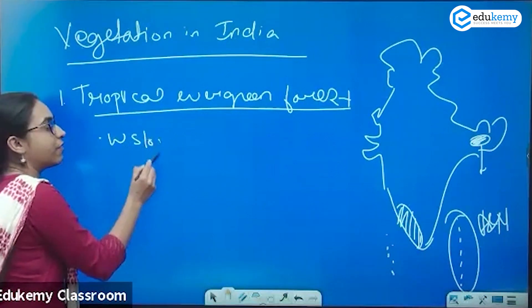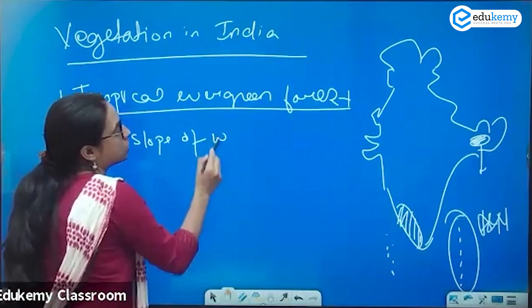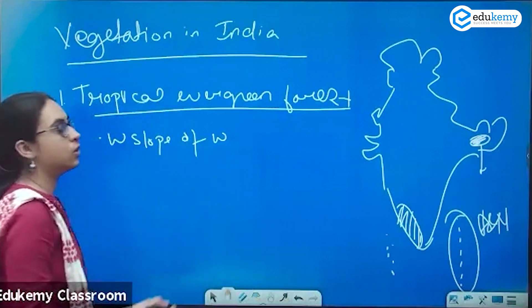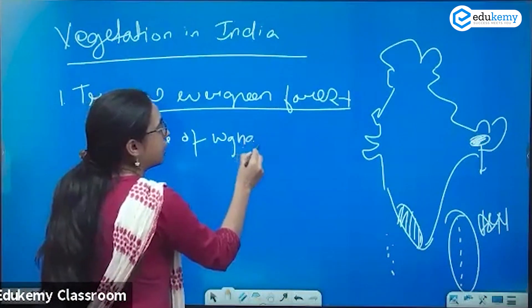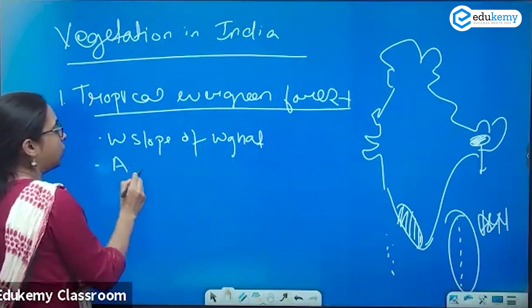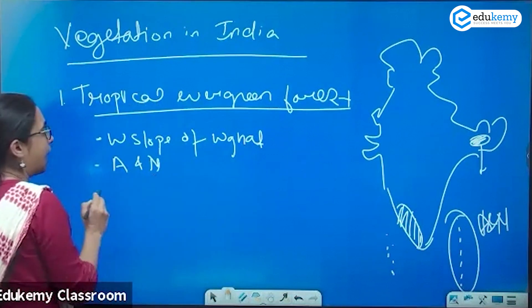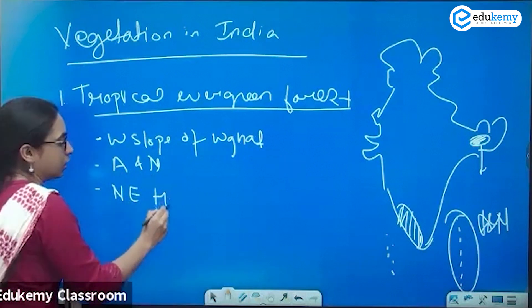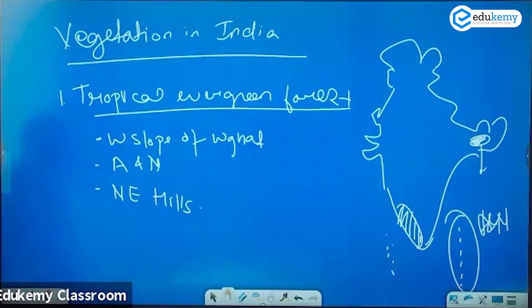Why the western slope? Because the eastern slope is in the rain shadow area. So the western slope of the Western Ghats, Andaman and Nicobar, and your northeastern hills — these are the places where they are found.